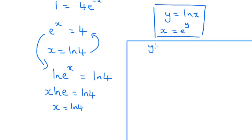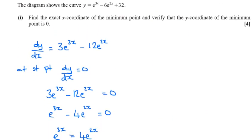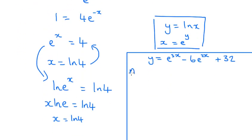So we have y is equal to e to the 3x minus 6e to the 2x plus 32.